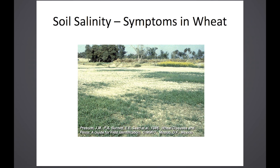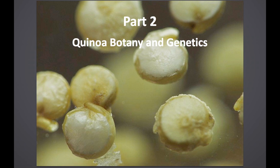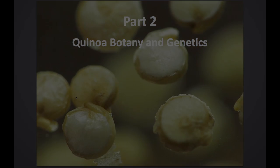Quinoa has even been shown to produce seed when grown in seawater, which is about 55 deci-siemens per meter. By contrast, the picture shown is wheat damaged by salinity at just 4 deci-siemens per meter. Barley can go up to about 6 deci-siemens per meter before seeing issues, while quinoa can go up to about 20 — three to five times what wheat and barley can handle. Moving on to Part 2: Quinoa Botany and Genetics.